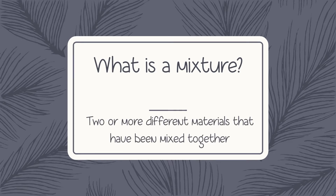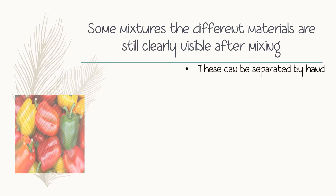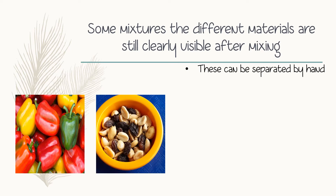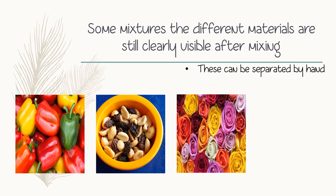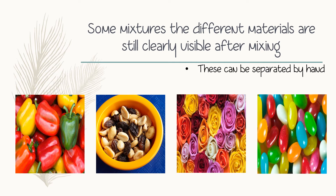A mixture is two or more different materials that have been mixed together. The first mixture you get is where the different materials are still clearly visible after mixing. For example, these can be separated by hand. Maybe you think of different colored peppers or peanuts and raisins, a bunch of flowers or maybe even jelly beans.